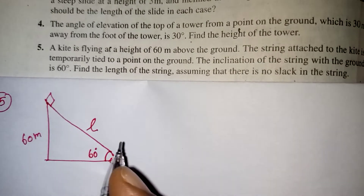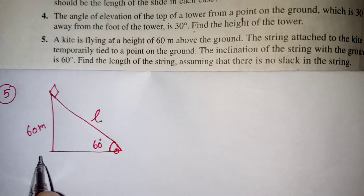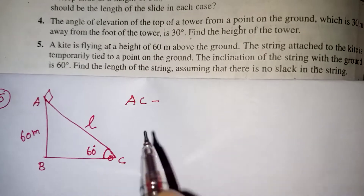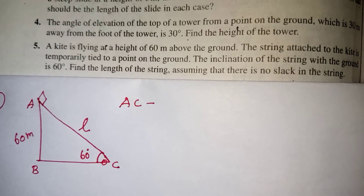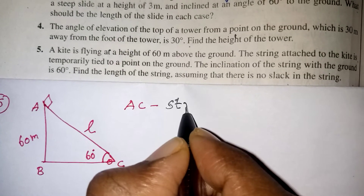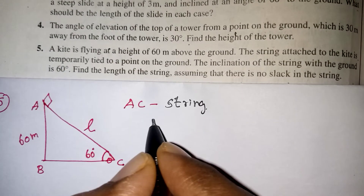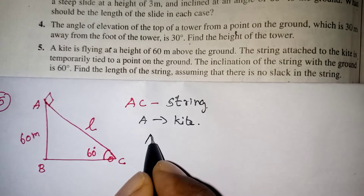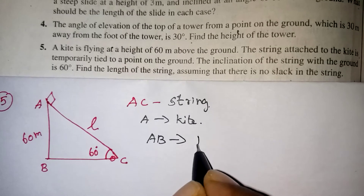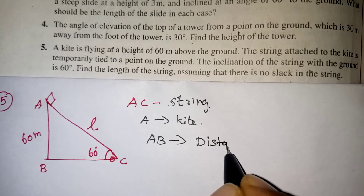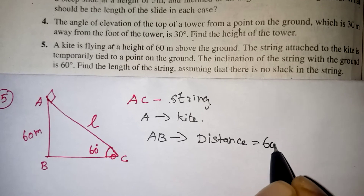This is our diagram. Let us take vertices A, B, and C. AC represents the string length — the length of the string. A is the position of the kite, and AB is the distance between the ground and the kite, which is equal to 60 meters.